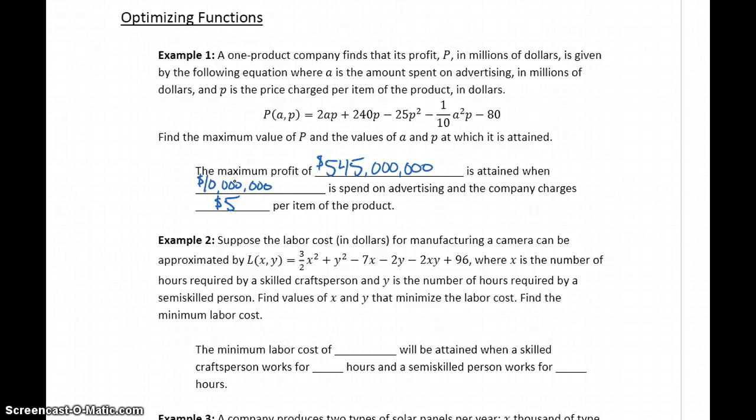So a maximum profit of 545 million when 10 million is spent on advertising and the company charges $5 per item of that product.